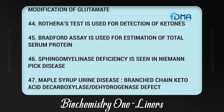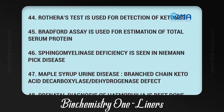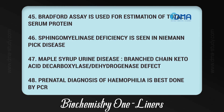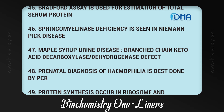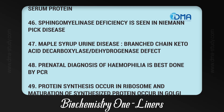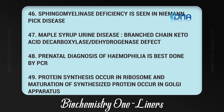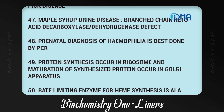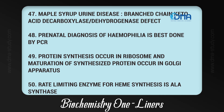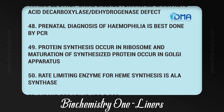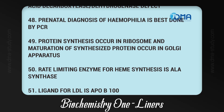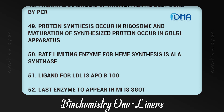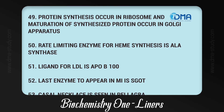47. Sphingomyelinase deficiency is seen in Niemann-Pick disease. 48. Maple syrup urine disease involves a branched-chain ketoacid decarboxylase dehydrogenase defect. 49. Prenatal diagnosis of hemophilia is best done by PCR. 50. Protein synthesis occurs in ribosomes and maturation of synthesized protein occurs in the Golgi apparatus. 51. Rate-limiting enzyme for heme synthesis is ALA synthase. 52. Ligand for LDL is APOB100.